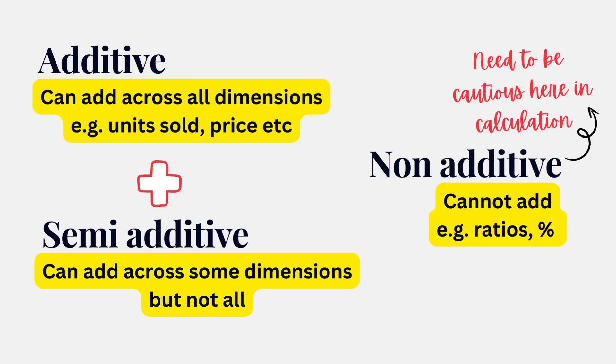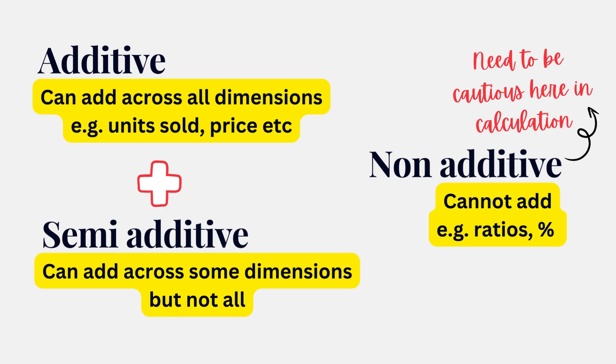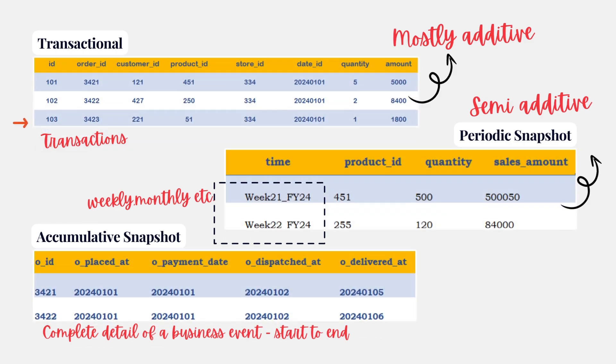In this video, we have learned different types of facts. We understand the properties of different types of facts and can easily identify them. We have also covered the types of fact tables and their use cases. In the next part of the series, I will talk about one other key concept in dimensional modeling, which is factless fact tables.